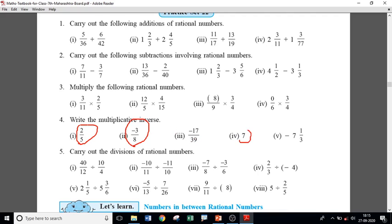Then 7, what about simply a number 7? So there is no denominator here. As there is no denominator written over here, so it means it has a denominator 1. Therefore, the multiplicative inverse of 7 is 1 upon 7.